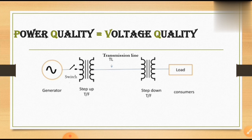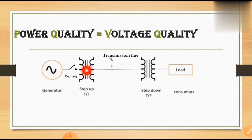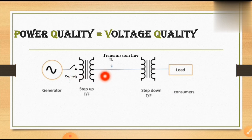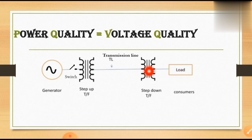Now I am considering a power system circuit — the single line diagram of the power system. According to this diagram, there is a generating station connected to a step-up transformer, then to the transmission line, then to a step-down transformer, and finally to the load.